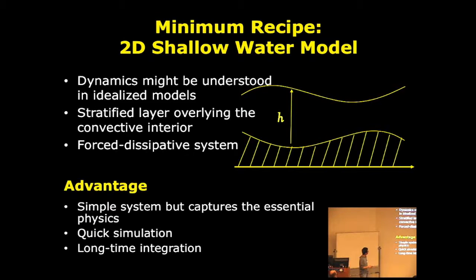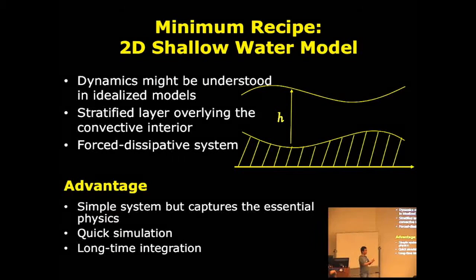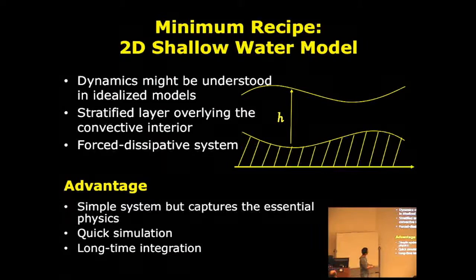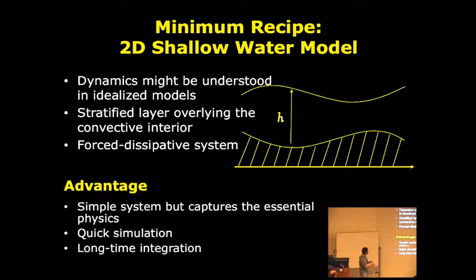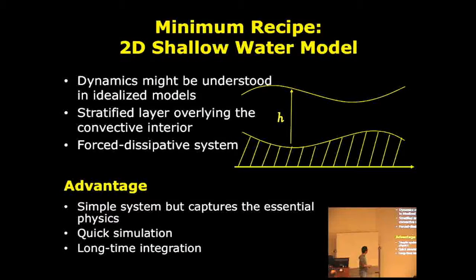I'll describe what the model looks like. It's a two-dimensional single-layer shallow water model. The shallow water layer looks like this. You can change the thickness and there is a very deep layer which didn't change. But you can have momentum exchange between the upper layer and lower layer. So basically you can simulate a stratified layer overlaying, sitting on a convective layer. You put thunderstorms in the boundary and you see what's going on in the shallow water layer. You can see jets going on.